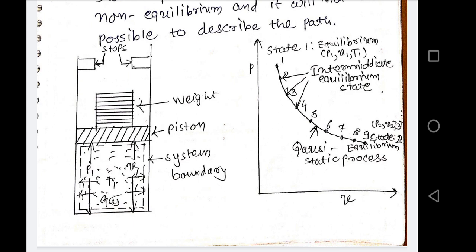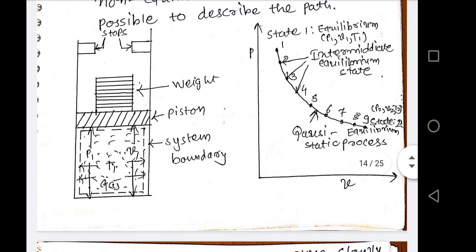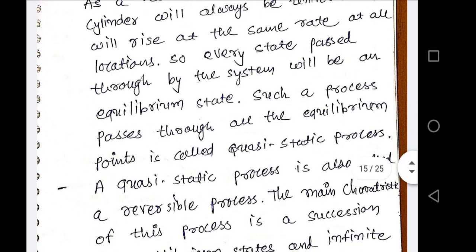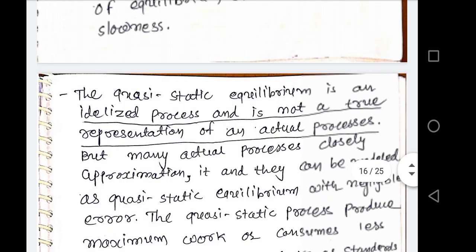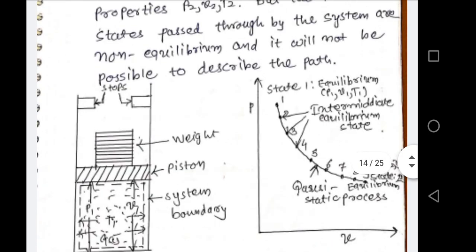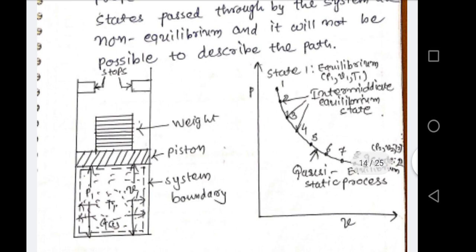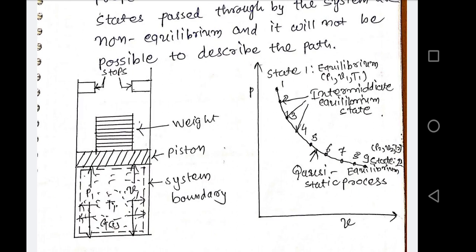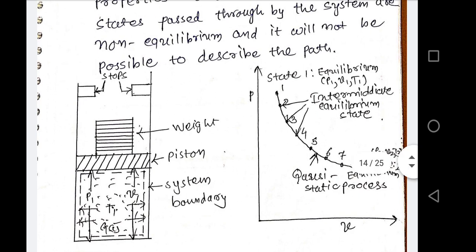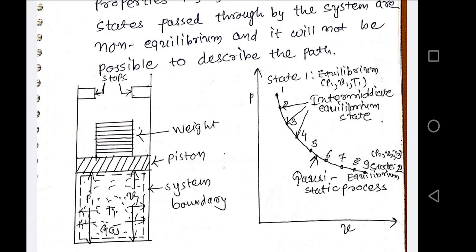And this process is known as a quasi-static process. Later on I will explain why it is called quasi-static. But before that quasi-static explanation, I am reversing this process. I am removing all the weights, getting all points 1 to 9, and obtaining the path of change of state.